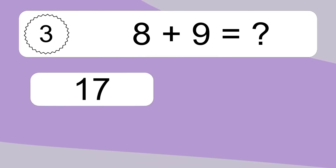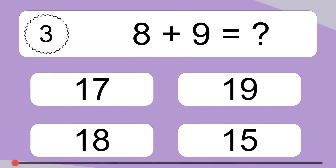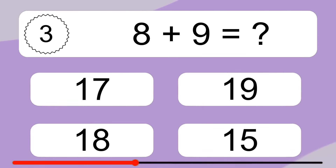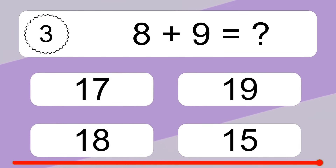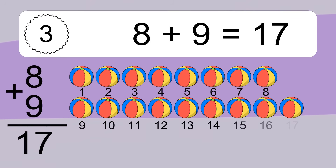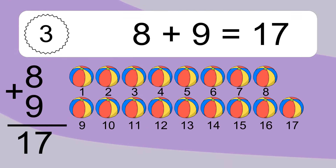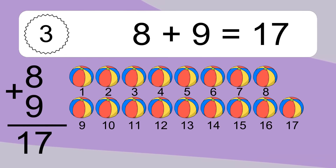8 plus 9 equals what? 8 plus 9 equals 17. Let's count it. 1, 2, 3, 4, 5, 6, 7, 8, 9, 10, 11, 12, 13, 14, 15, 16, 17.